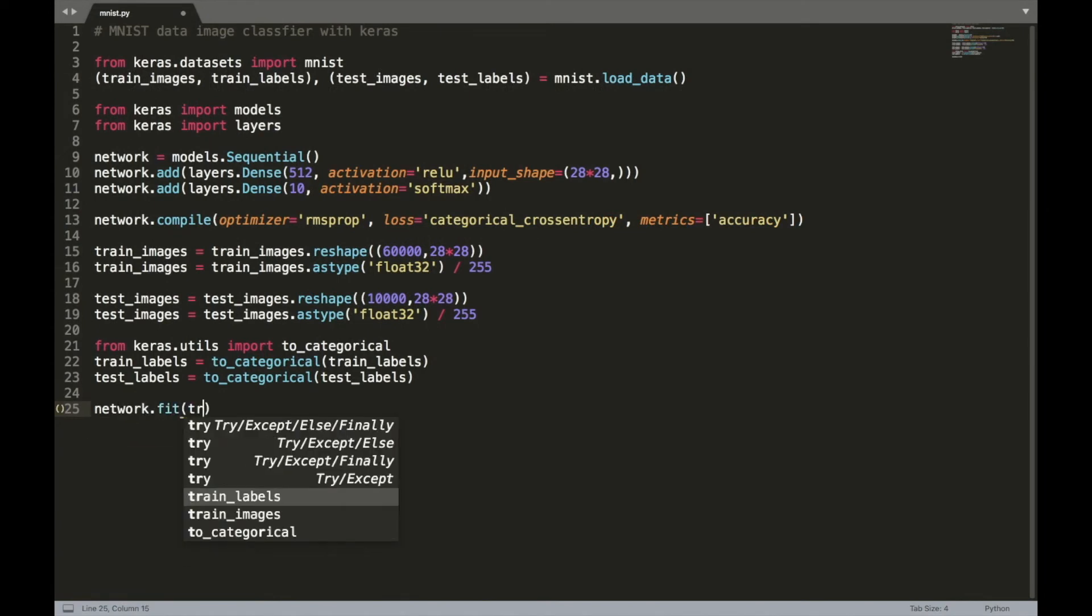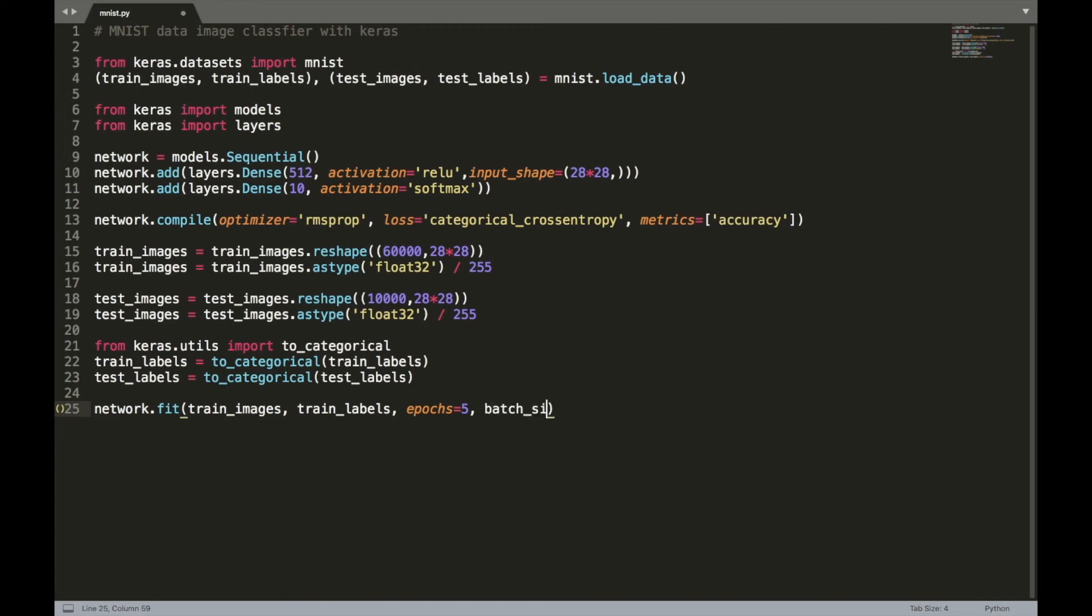Let's call the fit method to train the model on the data set which takes in four parameters: the training images, the training labels, the epochs, and the batch size.